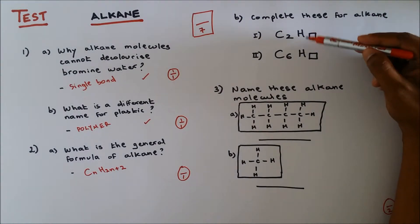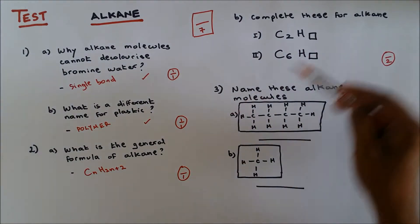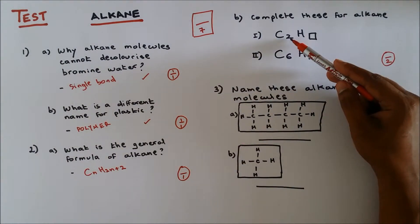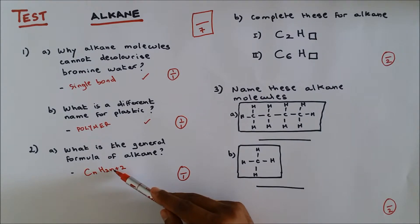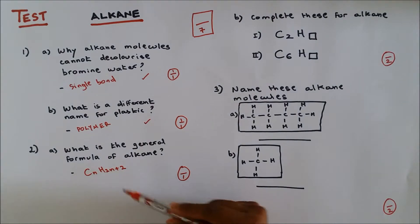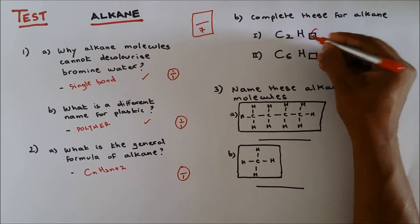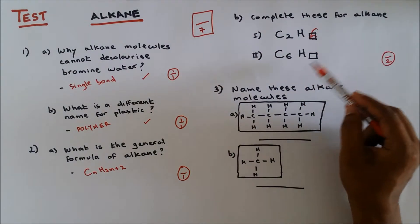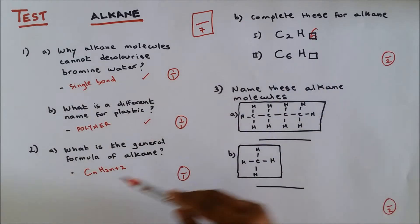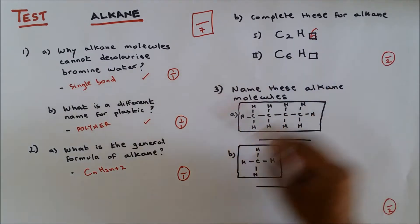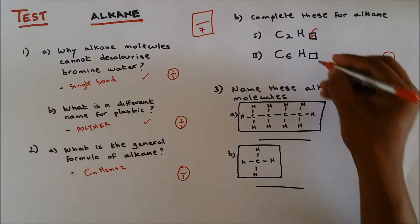If it's 2 carbons, then n is 2, so 2 times 2 is 4, plus 2 is 6, so hydrogen is 6. For this alkane there are 6 carbons, so n is equal to 6, so 2 times 6 is 12, plus 2 is 14. That's two out of two.